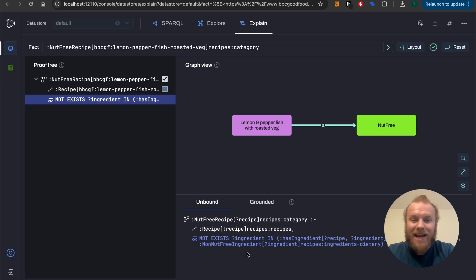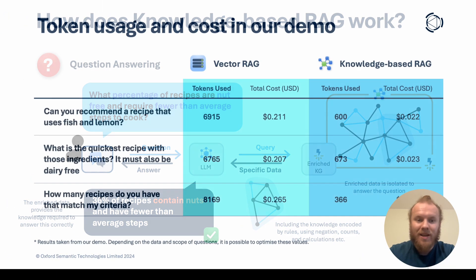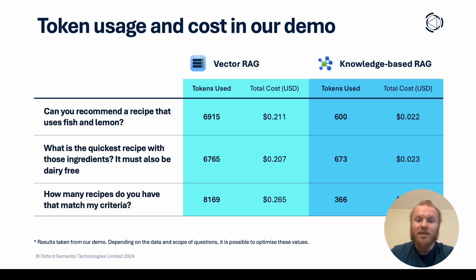Beyond accuracy, reliability, and performance, cost is also a factor. Here is a side-by-side comparison of some of the values taken from queries generated by our demo. As you can see, Knowledge-based RAG has used approximately 10 times fewer tokens to generate answers than VectorRAG has, not to mention that VectorRAG often spent this money returning the wrong answer.